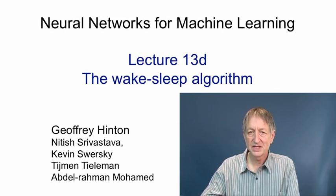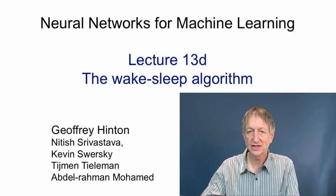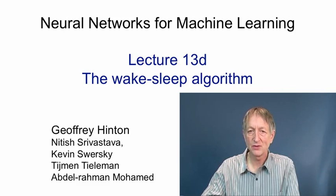The ideas behind the wake-sleep algorithm led to a whole new area of machine learning called variational learning, which didn't take off until the late 1990s, despite early examples like the wake-sleep algorithm, and is now one of the main ways of learning complicated graphical models in machine learning.